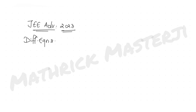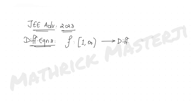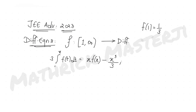The question tells us there is a differentiable function f which goes from 1 to values less than infinity. The condition given is f(1) = 1/3, and 3 times the integral from 1 to x of f(t) dt equals x·f(x) minus x³/3, where x belongs to [1, ∞). Also, e denotes the base of the natural logarithm.